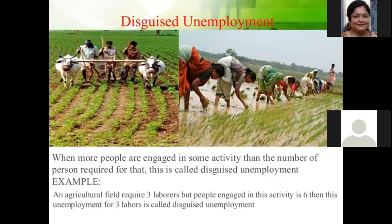Look at the picture I am showing you — ploughing and tilling of the land. This can be done by one particular person. But here there are three people doing the same job. So I need one but I have taken three — when more people are employed than what is required, we call it disguised unemployment.